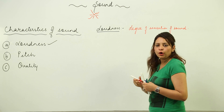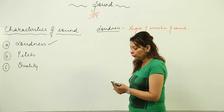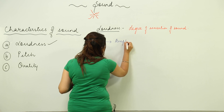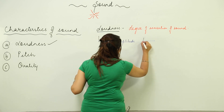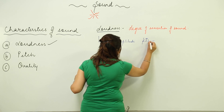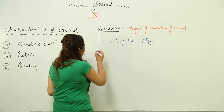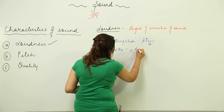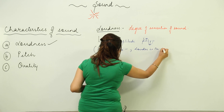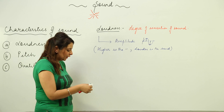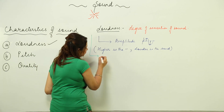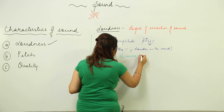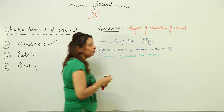Loudness is the degree of sensation of sound. On what factor does it depend? It depends upon amplitude. As we have already discussed, amplitude is the maximum displacement traveled in the upward or downward direction. So loudness depends upon amplitude — higher is the amplitude, louder is the sound. This is the main factor on which loudness depends. It also depends upon the distance between the source of sound and receiver.